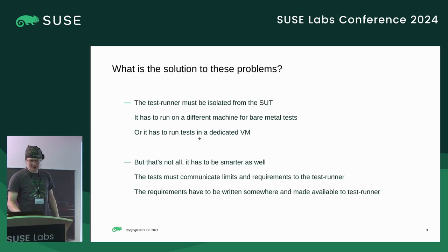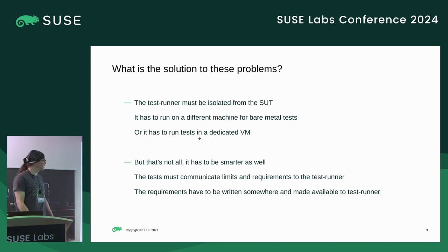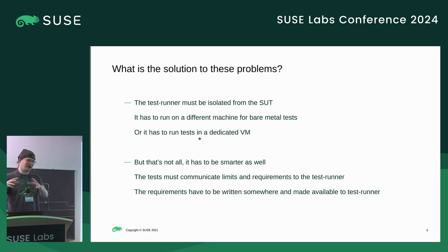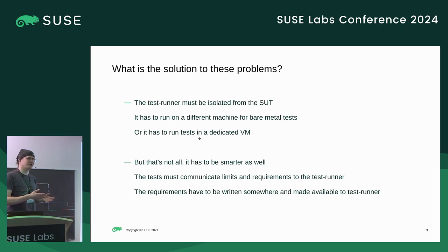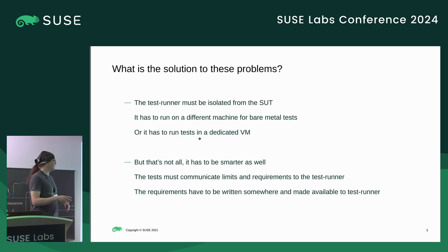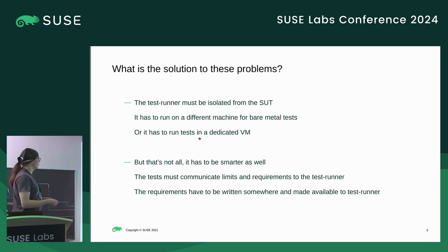There are actually two solutions. The first is that the software keeping state about test execution has to be separated from the actual machine running the test cases. That might seem obvious, but it's not the case for most frameworks out there. For VMs it's easy — you spin up a VM, talk to it through some I/O, and if it crashes or corrupts the filesystem, you just spin another one.